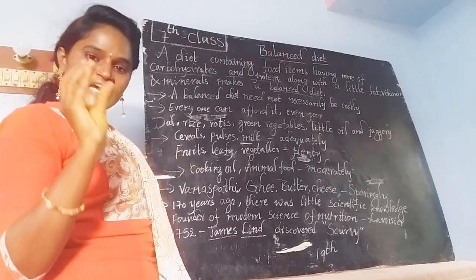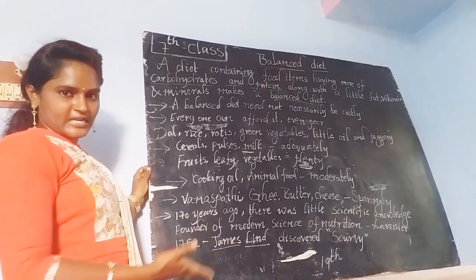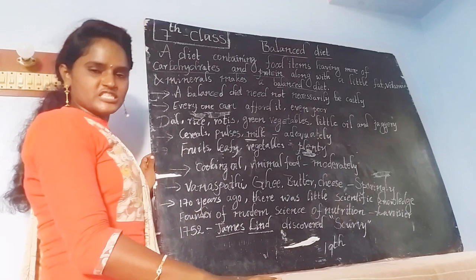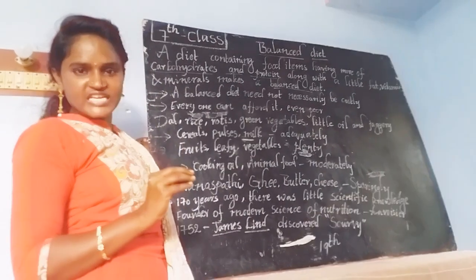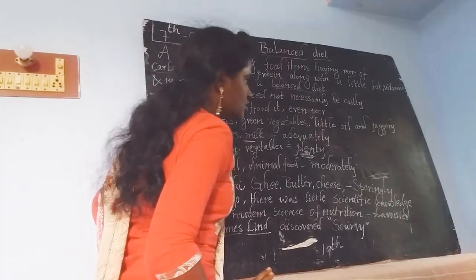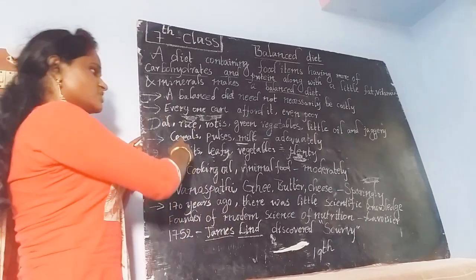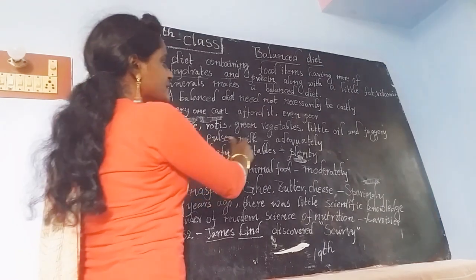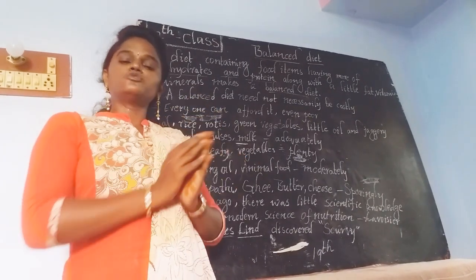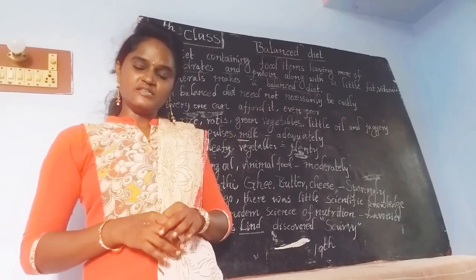Our regular diet may contain dal, rice — or if you are unable to take rice, you may take rotis instead. And then green vegetables — everyone should add certain amounts of green vegetables in their diet to make their diet a balanced one. Along with that, we also have to add a little amount of fats and a little amount of jaggery. Then cereals — we are well familiar with cereals, pulses, milk. It is important to know about which kind of food we have to take adequately, moderately, and sparingly.